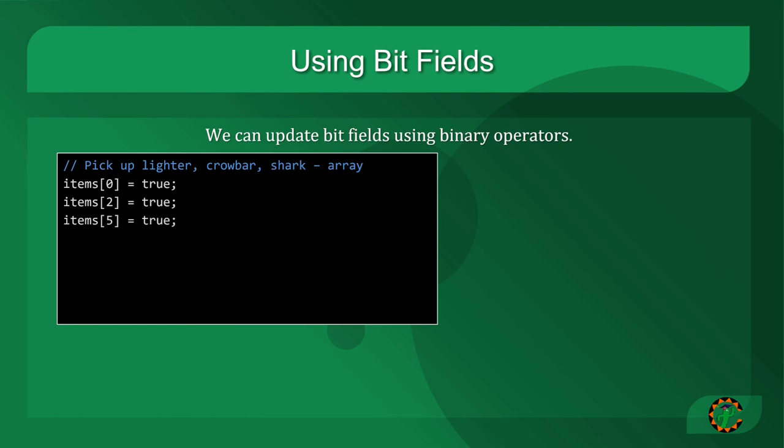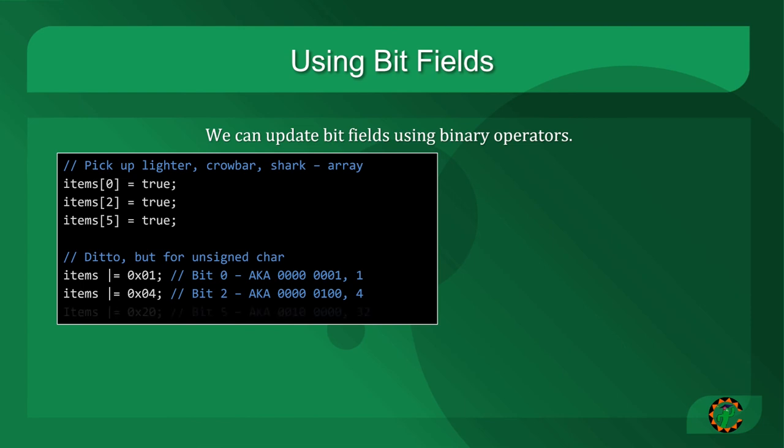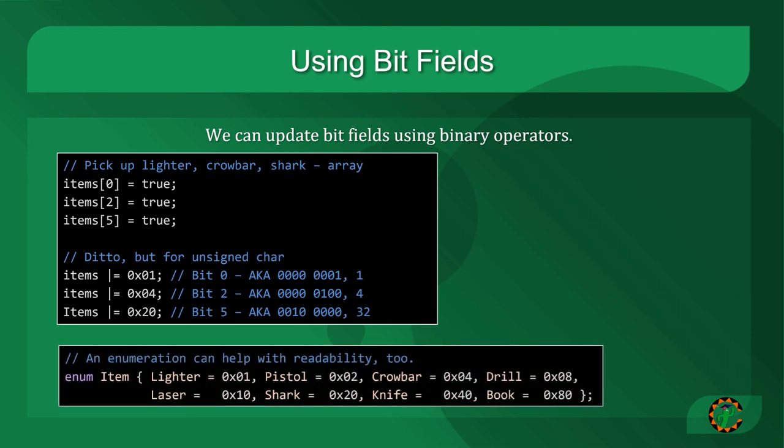For the unsigned character, we use a bitwise OR operation, or equals, in order to add a bit to the set. If it was already on, we leave it on. If it wasn't on, we turn it on. If we take our items variable or equals hex value 1, that effectively turns on bit 0, which has a value of 1. If we do the same thing with hex value 4, that's the value of bit number 2. And then if we do the same thing with hex value 20 or decimal 32, that's bit 5. The operation going on is effectively the same, but we're doing it with a bit instead of with a Boolean array. This can get a little bit difficult to follow and to work with, and it can be a little bit inflexible. So what we'll often do is create an enumeration with readable names but assigned to the bitwise values. In this case, lighter is 1, pistol is 2, crowbar is 4, drill is 8, laser is 16 or hex 10, shark is 32, knife is 64, and book is 128.